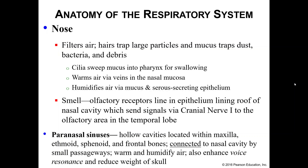What do we need a nose for besides breathing in air? We're going to filter the air — your nose hairs trap larger particles, and the mucus from your mucous membranes traps dust, bacteria, and other smaller debris. The cilia within the membranes sweep that mucus into the pharynx for swallowing. We're also going to warm the air coming in, using the veins in the nasal mucosa. And we humidify the air through the mucous membranes and the serous-secreting epithelial tissue found within the nose itself.